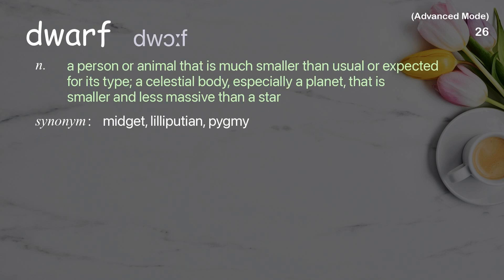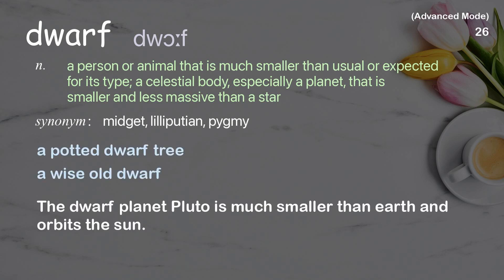Dwarf: a person or animal that is much smaller than usual or expected for its type; a celestial body, especially a planet, that is smaller and less massive than a star. Examples: a potted dwarf tree, a wise old dwarf. The dwarf planet Pluto is much smaller than Earth and orbits the Sun.